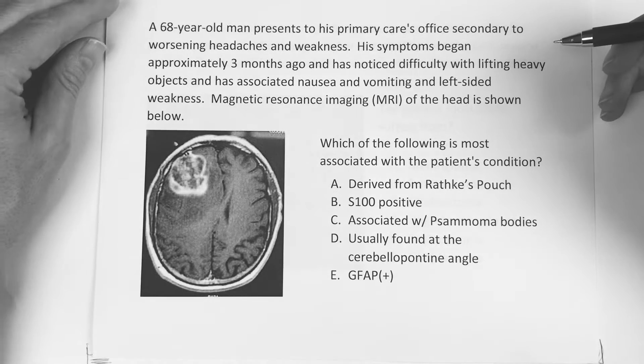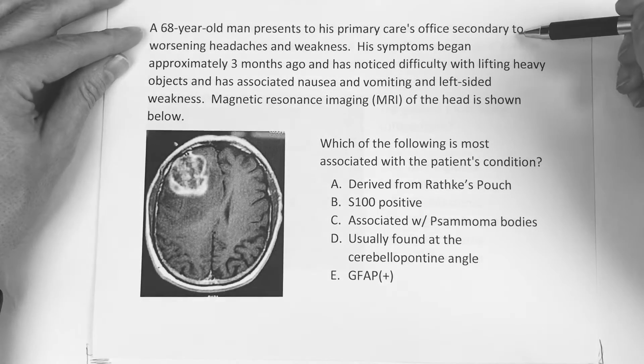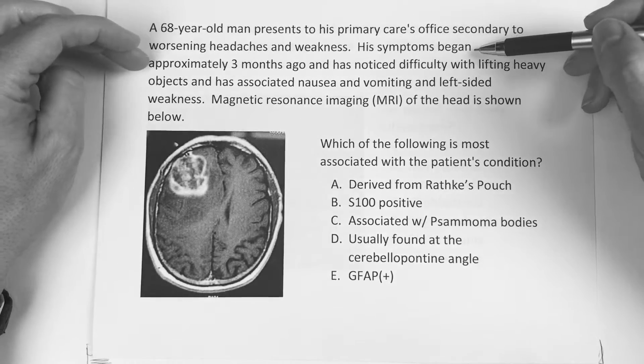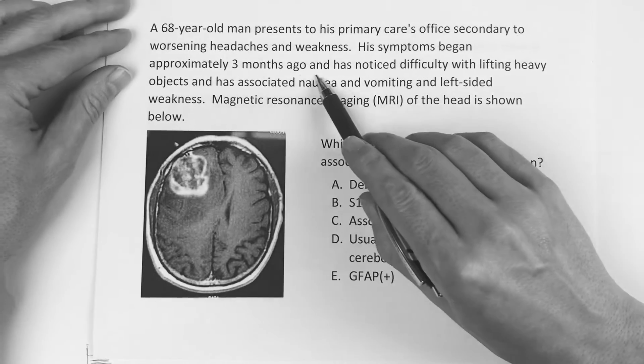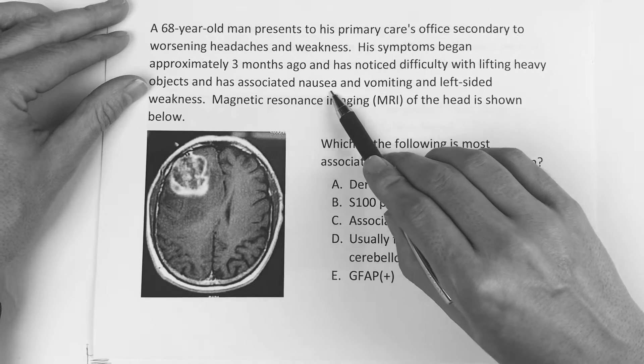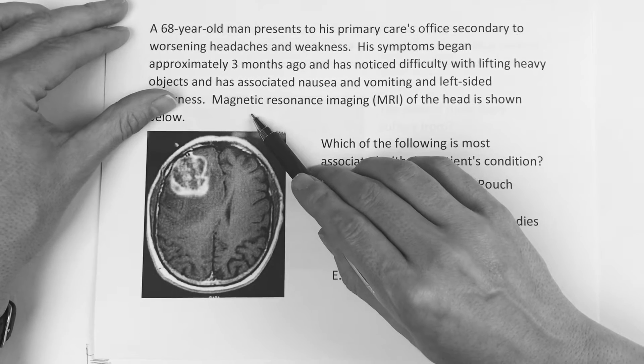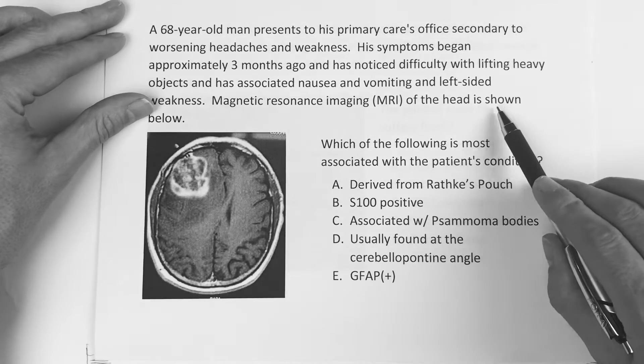I think the first one or two questions are pretty good, so try those and hopefully you like the video. Question number one reads: a 68-year-old man presents to his primary care's office secondary to worsening headaches and weakness. His symptoms began approximately three months ago; he's noticed difficulty lifting heavy objects, associated nausea and vomiting, and left-sided weakness. The MRI of the head is shown below.